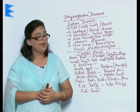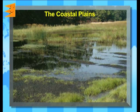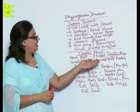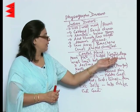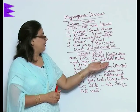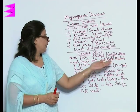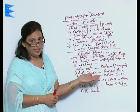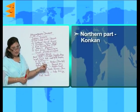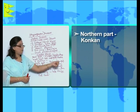Let us move on to the fifth physiographic division, and that is the coastal plains. The peninsular plateau is flanked by coastal strips, and the western coast lies between the Western Ghats and the Arabian Sea. It has three sections: the first is the northern part which is also called the Konkan, between Mumbai and Goa.